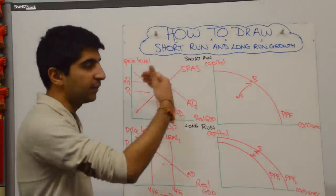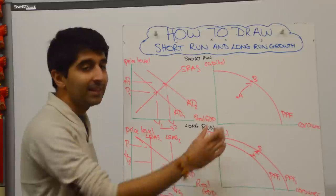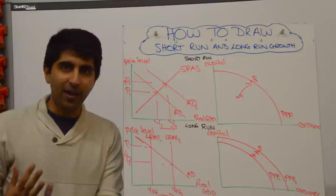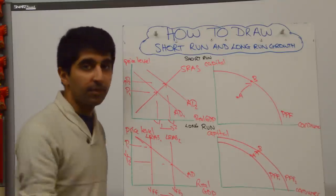So short-run growth, the shift of AD to the right, a movement from a point inside the PPF to on the PPF. And long-run growth, the shift to the right of LRAS or a shift outwards of the PPF. All done.